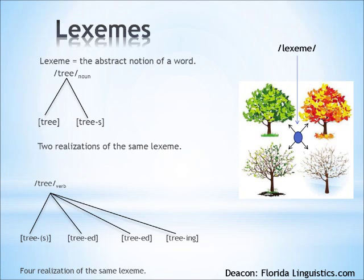An astute observer might ask: why do we have to have this noun lexeme and this verb lexeme? Why can't we just say there's a lexeme tree and it can appear with six different surface realizations? If you think such a thing, then you are kind of on the right track — we're just not quite prepared to tackle that problem yet. But later on, we'll see if that's the right train of thought.